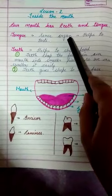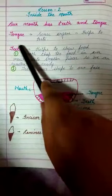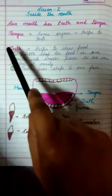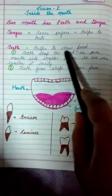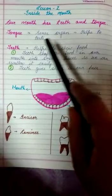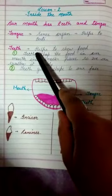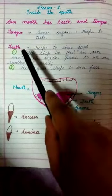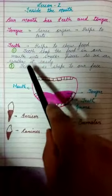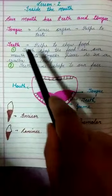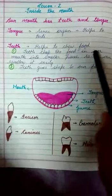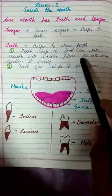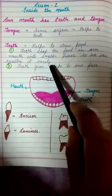Now we will proceed and we will discuss about the teeth in this chapter. Teeth help to chew food. Teeth joh hoti hai woh khana chabane mein help kertey hai. Do functions hai basically teeth ke. Teeth chop the food in our mouth into smaller pieces so we can swallow it easily.